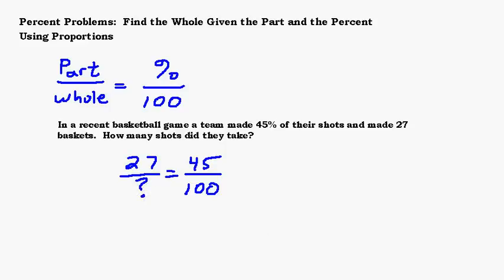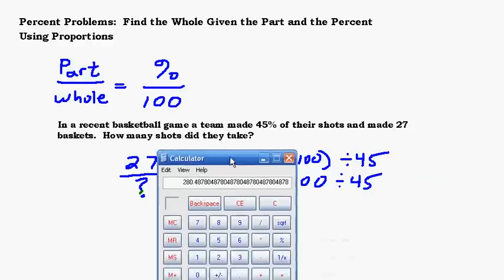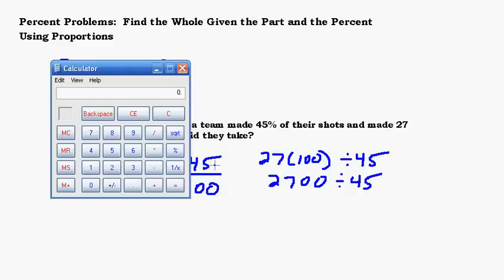If we're going to use the shortcut, we multiply the two numbers that are across from each other and divide by this number that's across from the answer we want to figure out. We need to do 27 times 100 and then divide it by 45. 2700 divided by 45. Let's pull out the calculator. 2700 divided by 45 is 60. That one wasn't too bad.